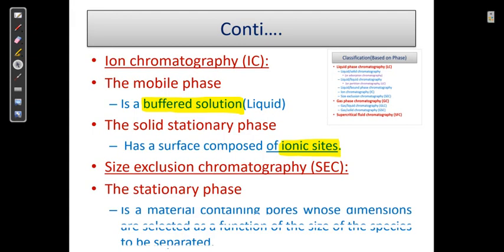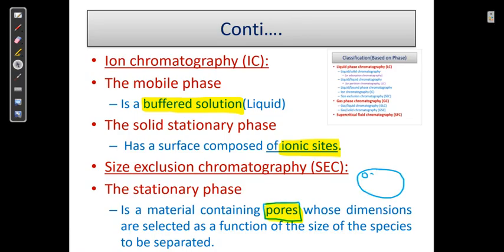In size exclusion chromatography, the stationary phase is a material that has pores, because separation depends on the size of the molecules relative to the pore size. The size of the pores is very important in size exclusion chromatography.